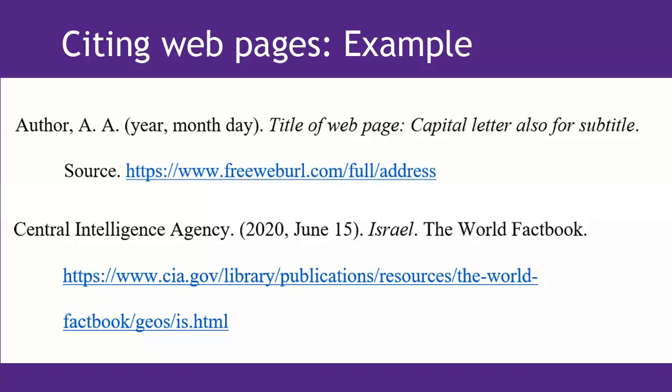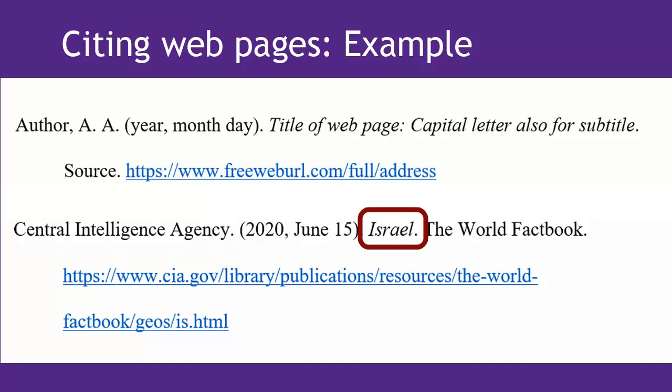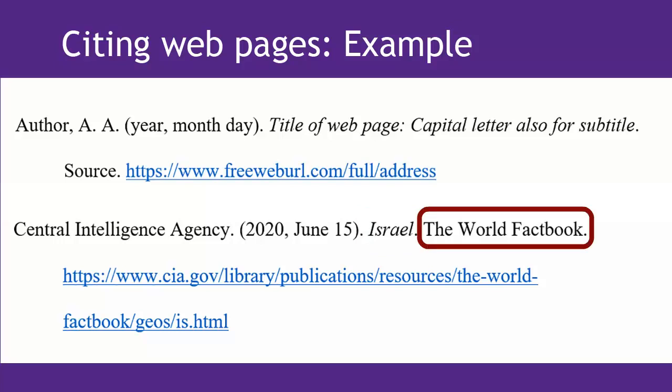Now we can create our citation. For a corporate author like this one, you'll want to capitalize every significant word of their name since it's a proper noun, rather than using the abbreviation — in this case CIA. Web page titles are in italics and use sentence case capitalization, just like books, where you only capitalize the first word of the title, subtitle, and proper nouns. Then the name of the source is in non-italics font, and finally you end it with the full URL.